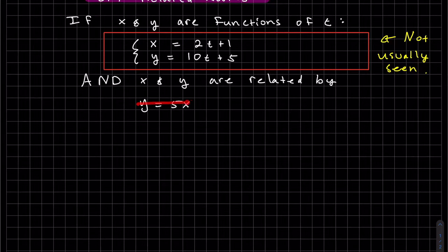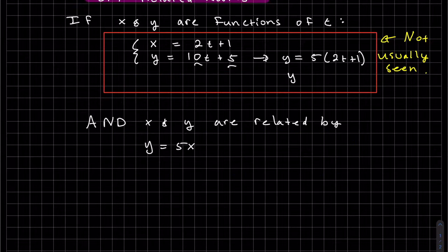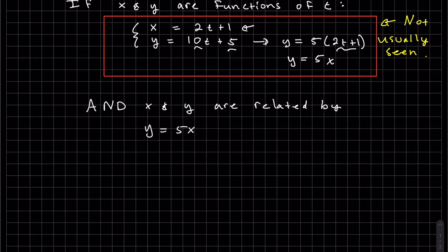Just so you know, I didn't just make up this relationship — we can see this relationship up here. If I pull out a 5, since it has a 5 in common, I get 2t plus 1. So this is 5 times (2t plus 1), which is actually x. So that's our relationship between x and y, given these two functions in terms of t.